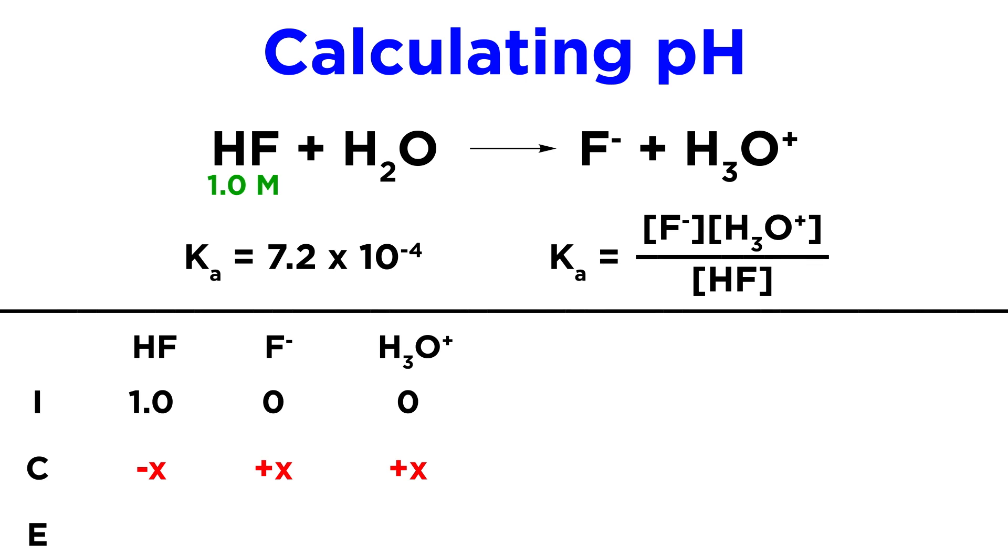And given the 1 to 1 to 1 ratio, we should put plus X for the other two substances, given that the Ka of HF is such that the hydronium produced will make the hydronium present due to autoionization of water totally negligible. This means the equilibrium concentrations will be 1 minus X, X, and X.